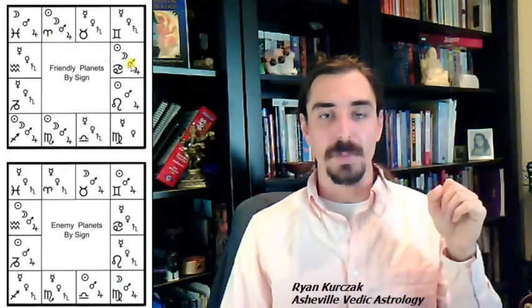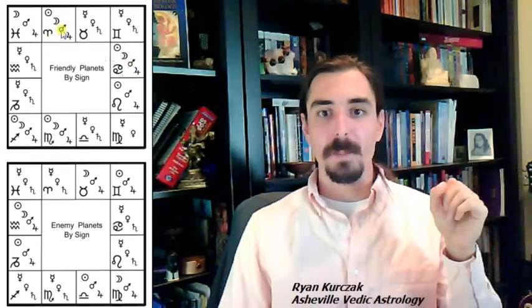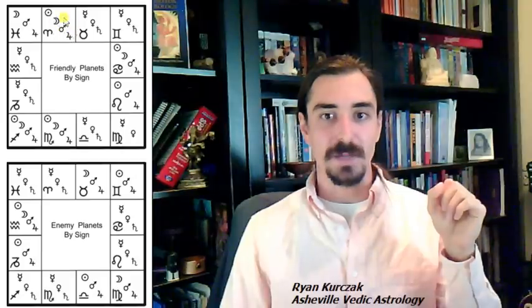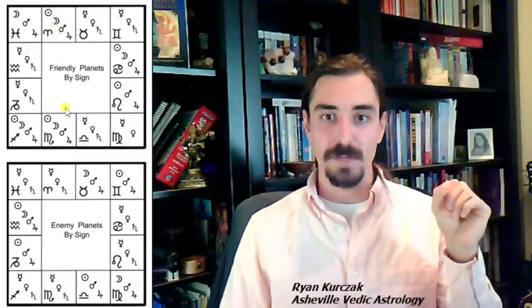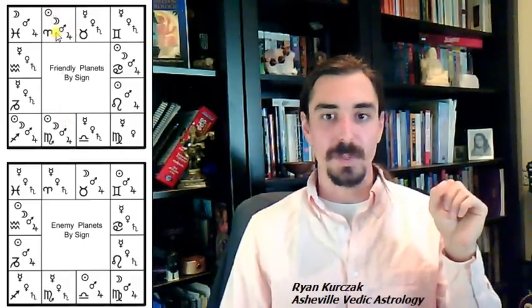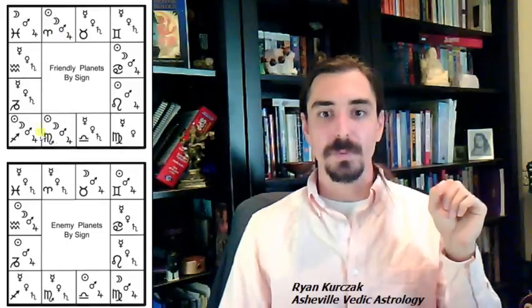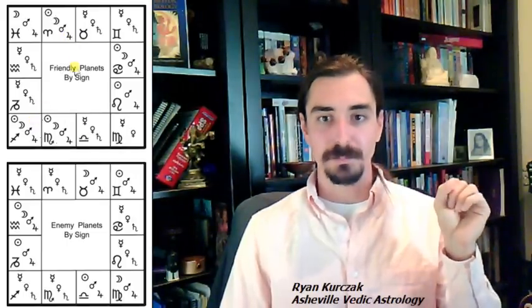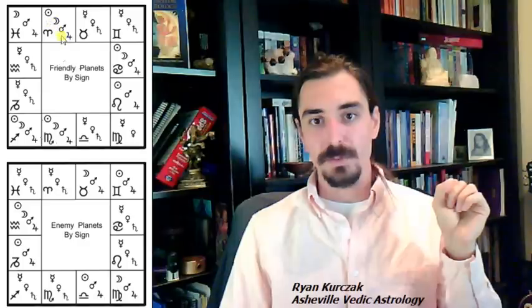Mars rules the 1st house. And any planet that rules the Ascendant, the 1st house, is typically considered helpful, even though he does rule the 8th, since he rules the 1st, it is helpful. Jupiter rules the 9th, which is one of the more powerful trines. So these are the friendly planets.